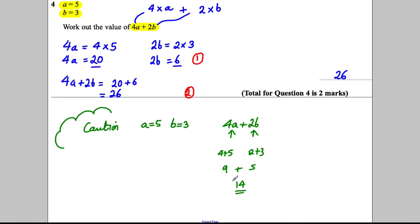This is not the right answer, so you must be careful of that. Remember, 4A means 4 multiplied by A, 2B means 2 multiplied by B, and that will stop you making a mistake.